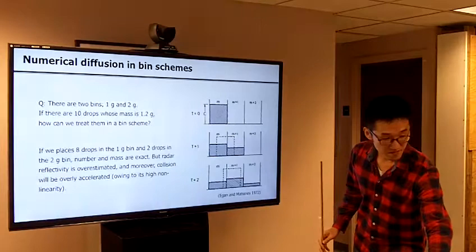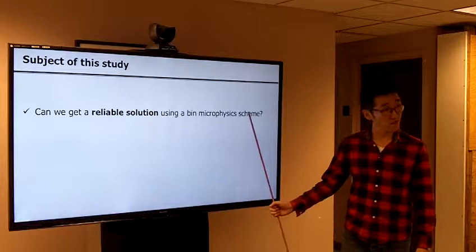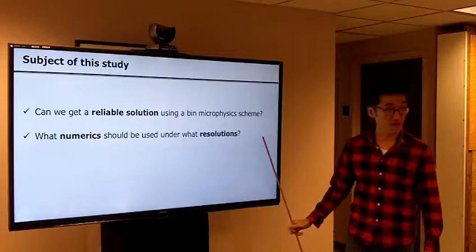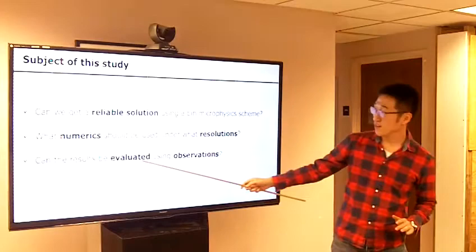The subject of this study is: can you get a reliable solution using a bin scheme in the sense of numerical diffusion? And what numerics should be used and at what resolutions to get a reliable, convergent solution? Supposing we get a solution, can the result be evaluated using observations?